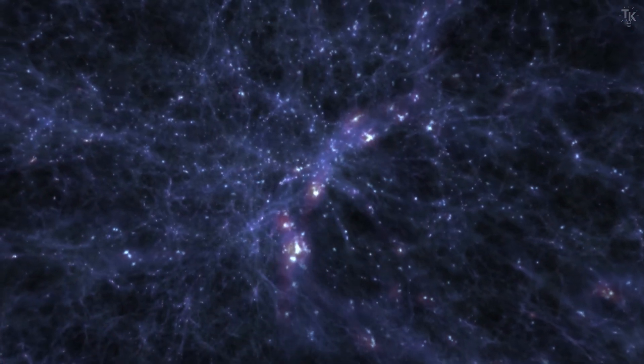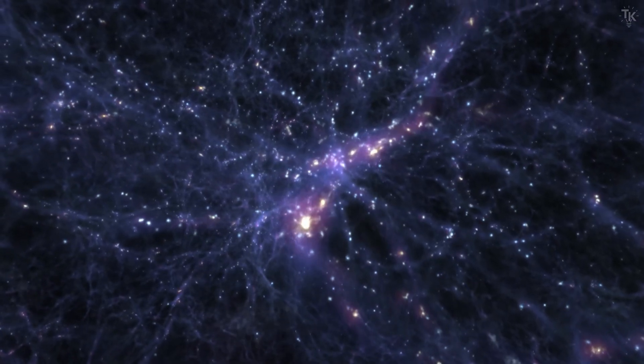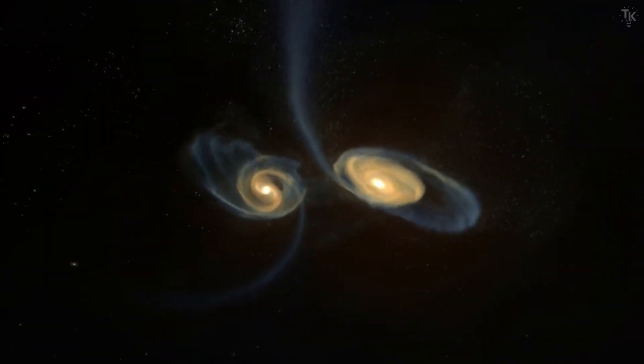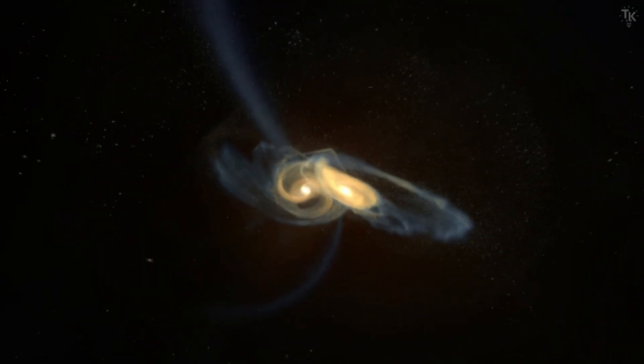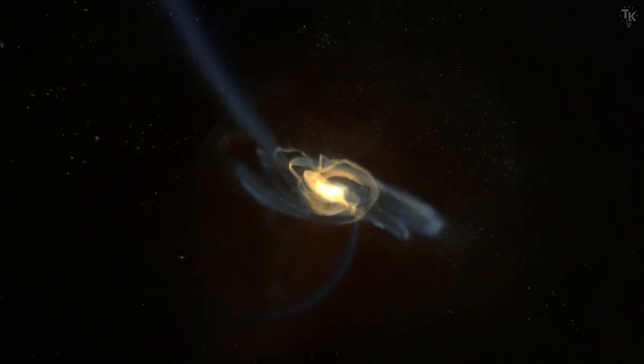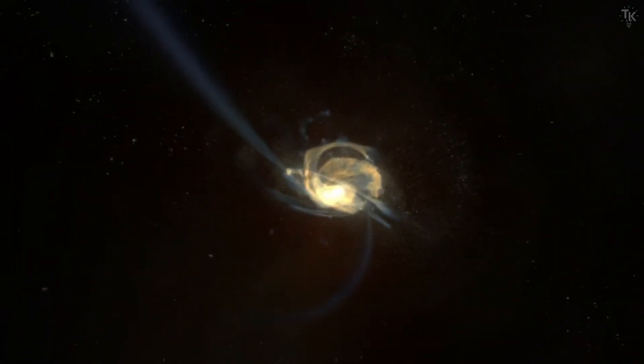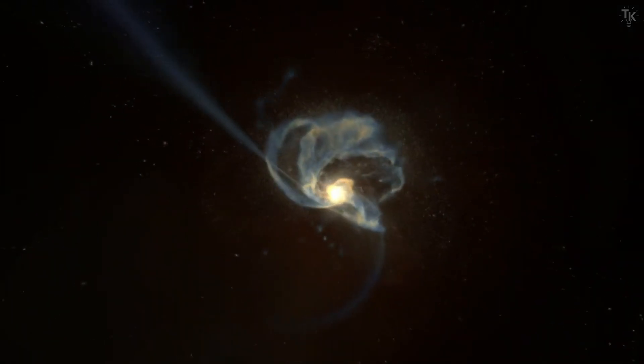In the early universe, many small galaxies like this were born. At that time, the universe was smaller than it is today, and galaxies were much closer together. Therefore, galaxies were strongly attracted to one another by gravity and frequently collided.